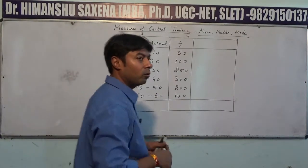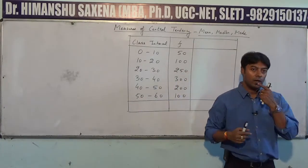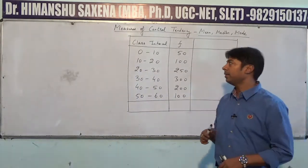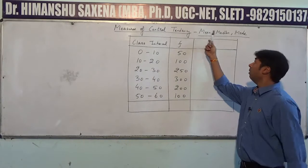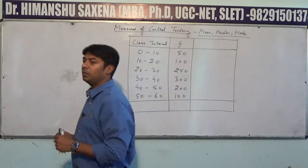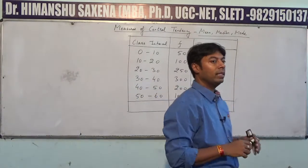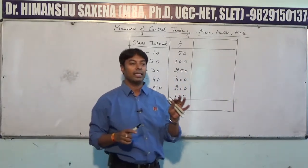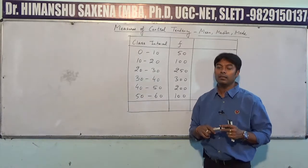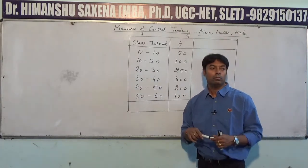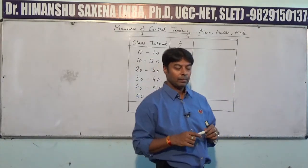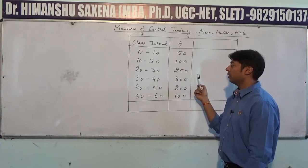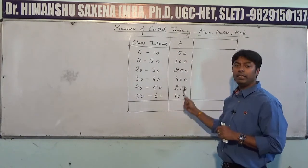The topic we are going to start is measures of central tendency, popularly denoted by mean, median, and mode. Mean refers to the average of all the elements, while median denotes the central value, and mode stands for the most occurring value. We are going to do the calculations for mean, median, as well as mode. We will start with mean using an illustration with class intervals and frequency.